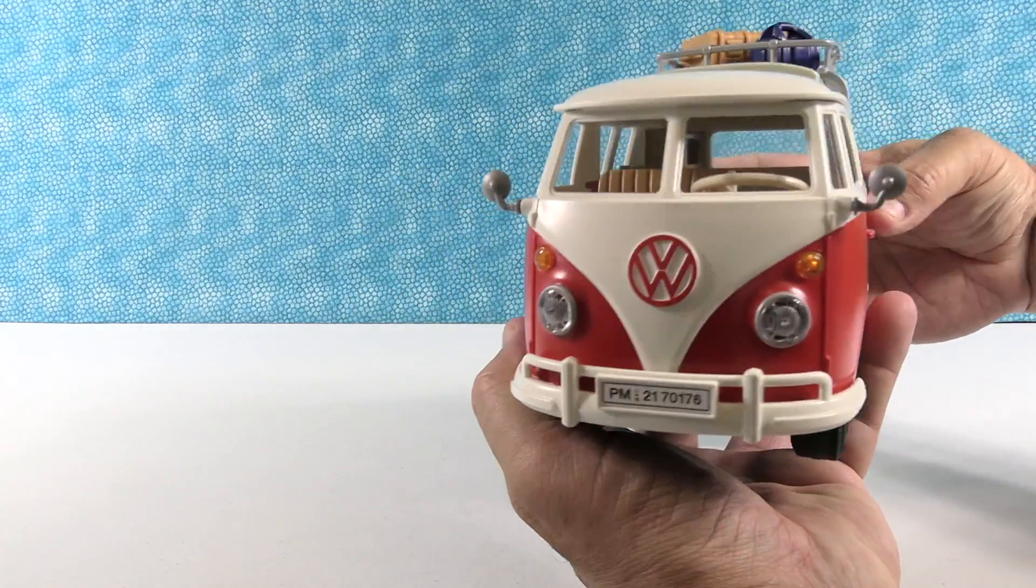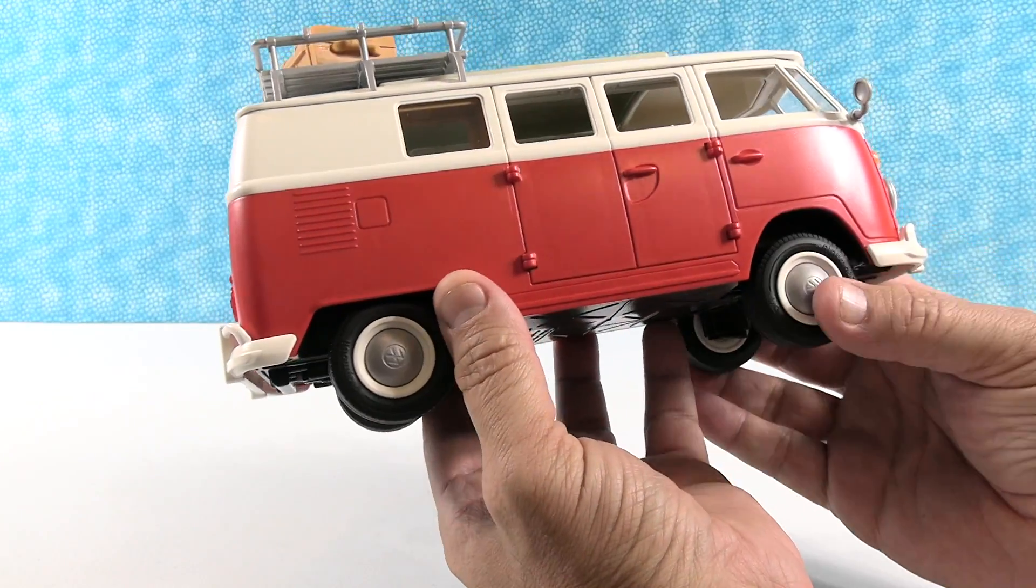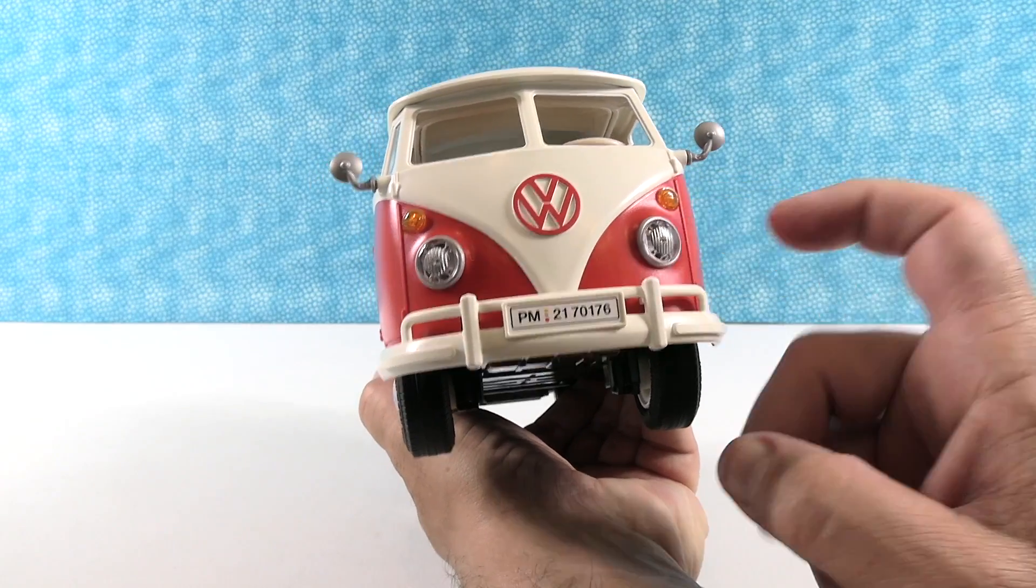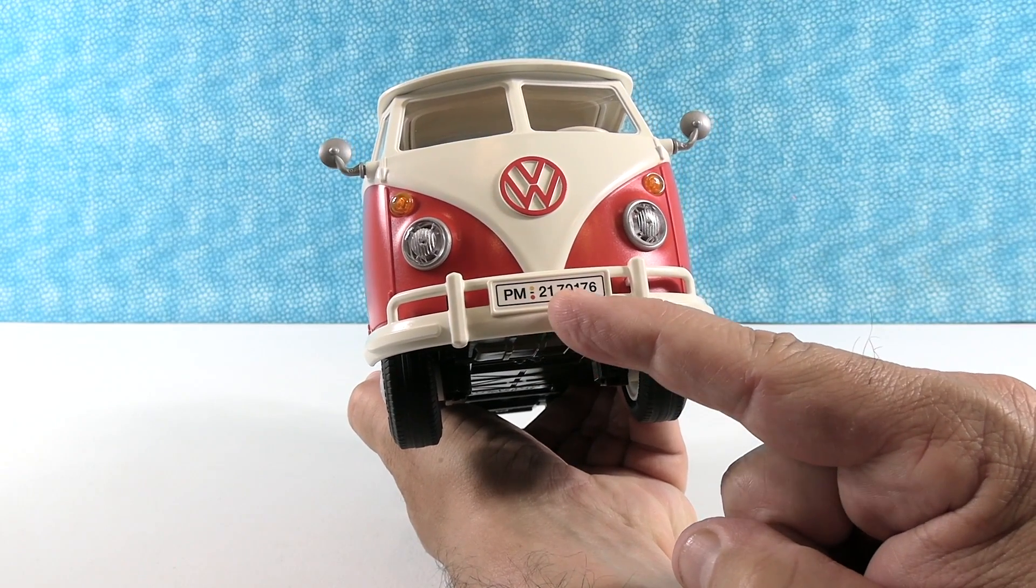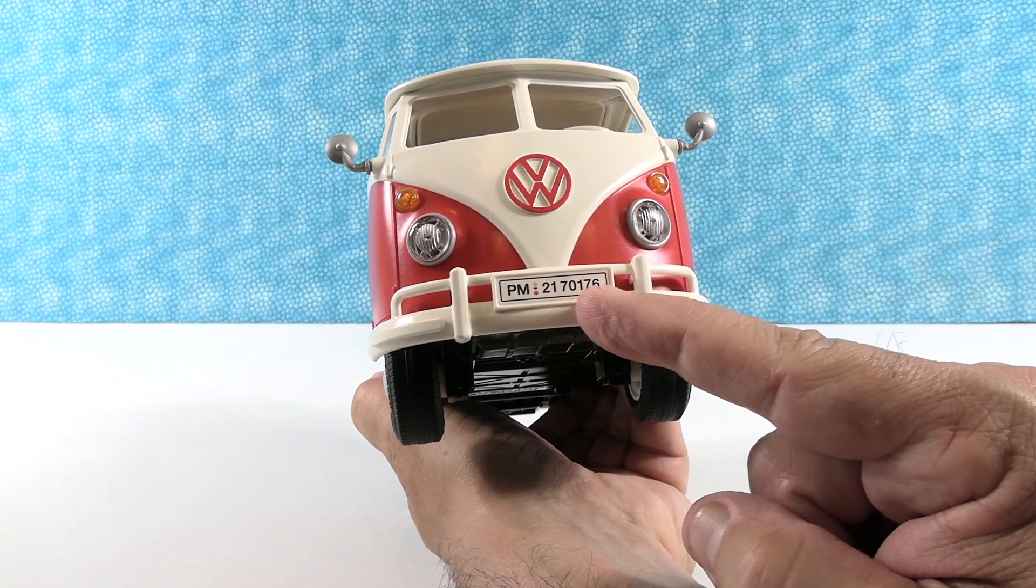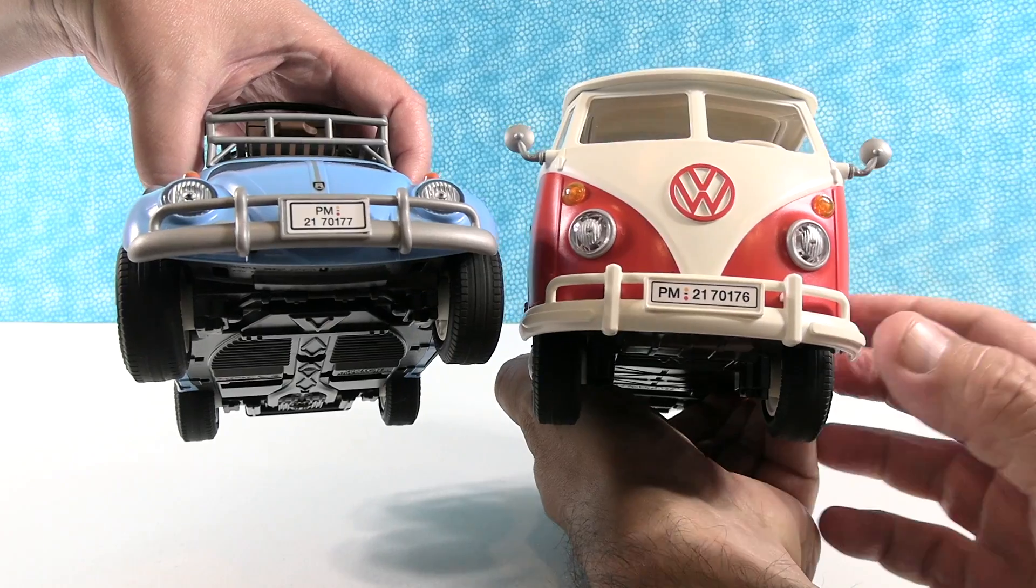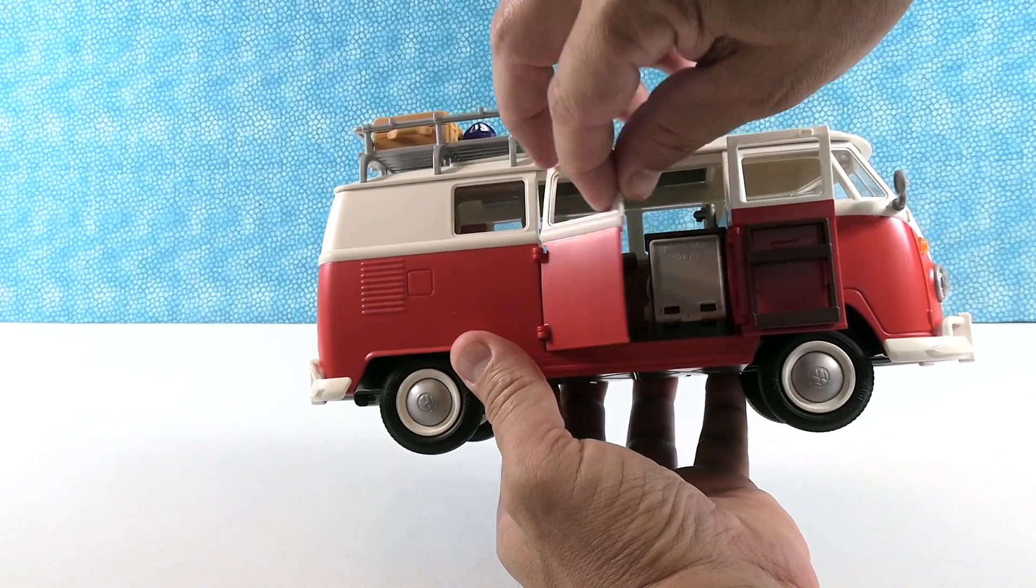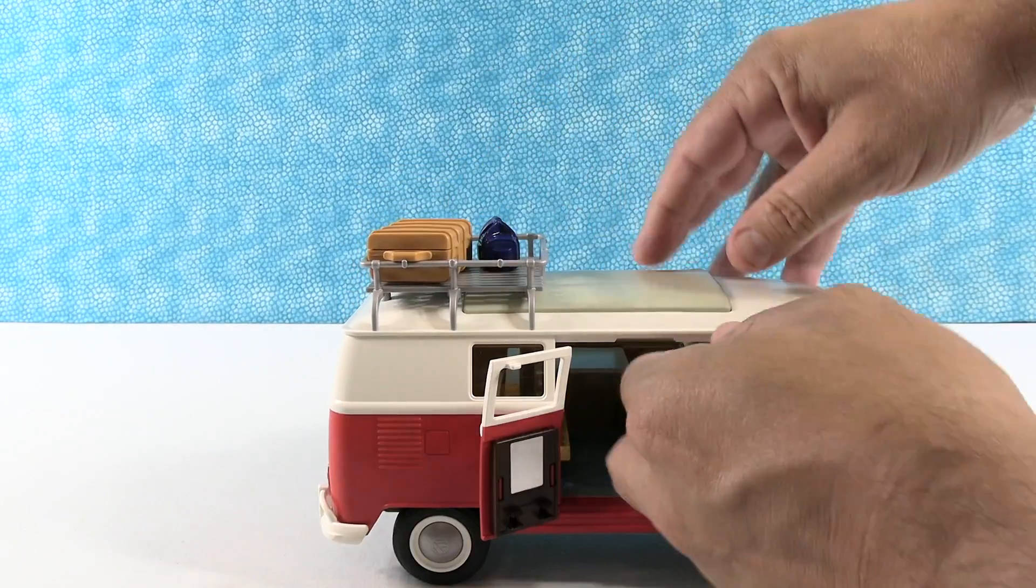All right. So this is the T1 camping bus. The styling on this is awesome as well. The colors are authentic. All the details are great. I love the front with the lights. Why don't you talk about the license plates real quick. So I love this detail. PM 2170176. That's Playmobil 2021. And there's the set number right there. Well, that's awesome. And the beetle has exactly the same thing going on set number 70177. That's a really cool detail. Isn't that neat?